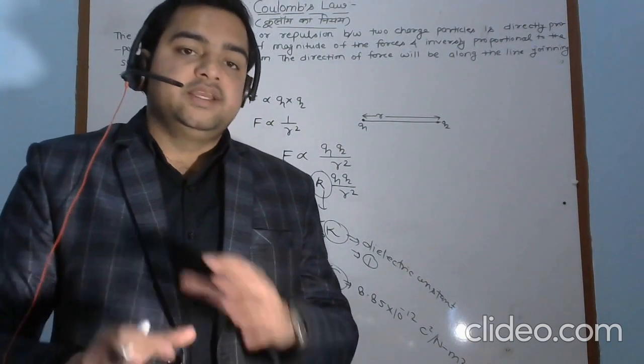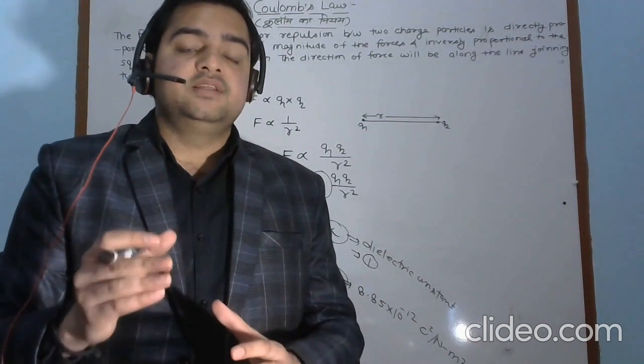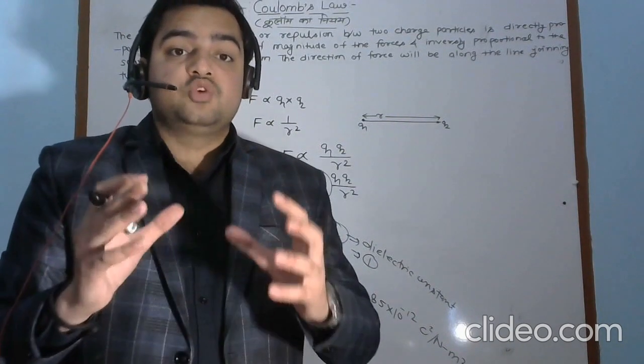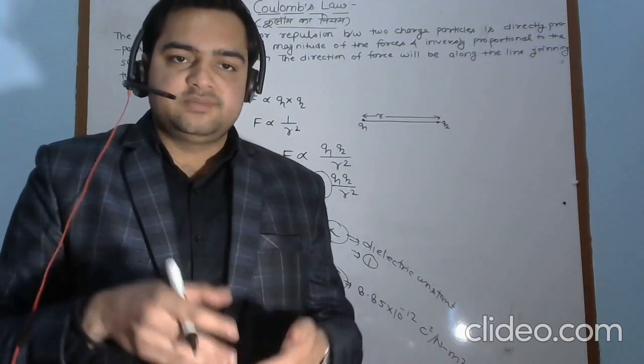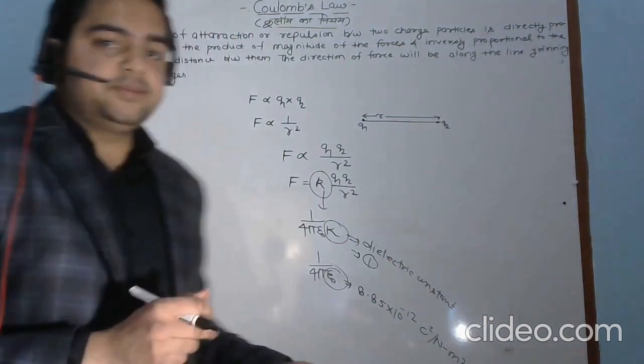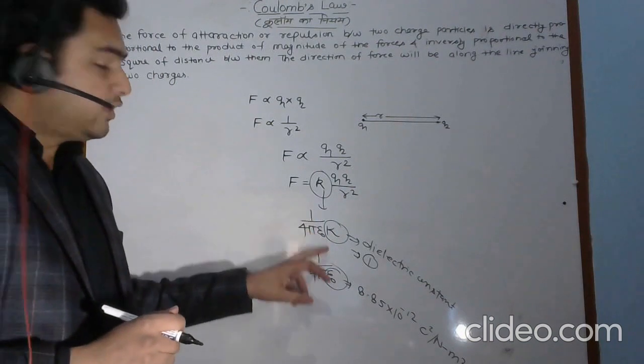That is why the higher the value of permittivity, the medium will absorb more electric field lines, due to which the force acting between the charge particles will decrease. That is why epsilon naught is written in 1 upon terms.